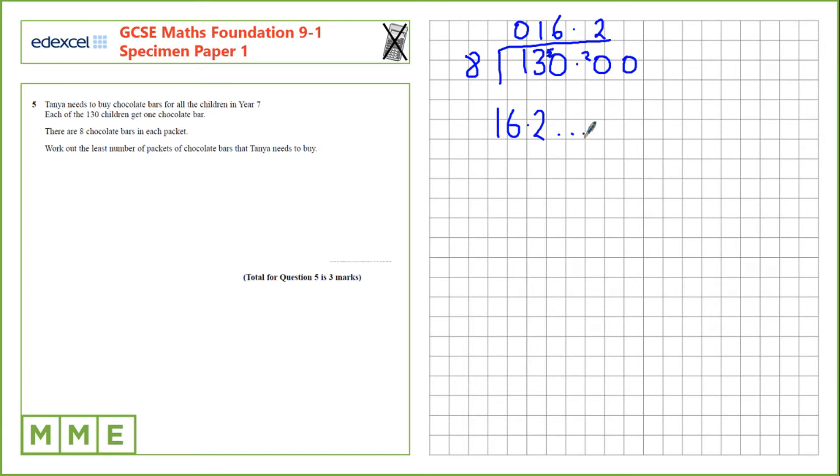So we've got 16.2 with some other decimal places. If she needs to get 16.2 packets that means the actual number of full packets that she needs to buy is 17. We've rounded up.